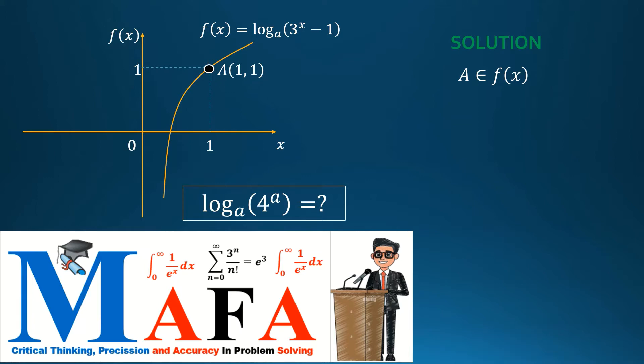From there, we see that this point belongs to my f(x) and it means that f(1) is equal to 1. So by doing so, it means logarithm to the base a of 3 to the 1 minus 1 is 1.